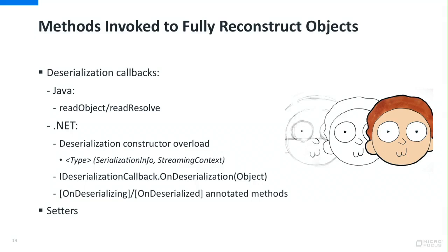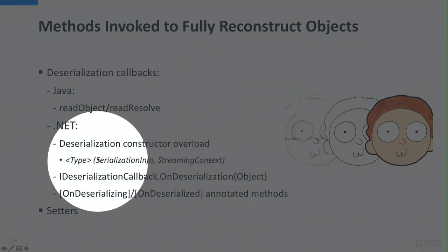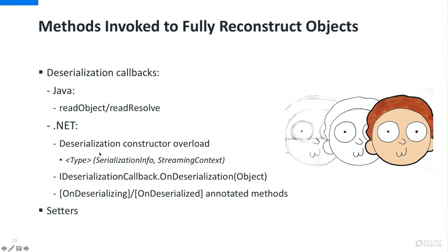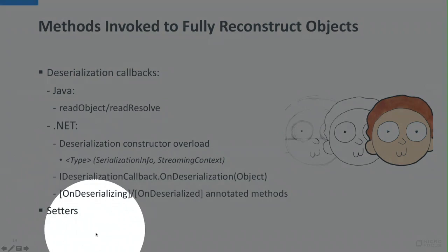However, apart from the default constructor, there will be other methods that get invoked. In Java, we get readObject and readResolve methods. In .NET, the same thing — we'll have a serialization constructor, serialization callbacks, and even annotations to mark methods invoked by the framework to fully reconstruct the object. Similarly with XML and JSON, these libraries will invoke the default constructor and then invoke setters to populate the data in the class types.